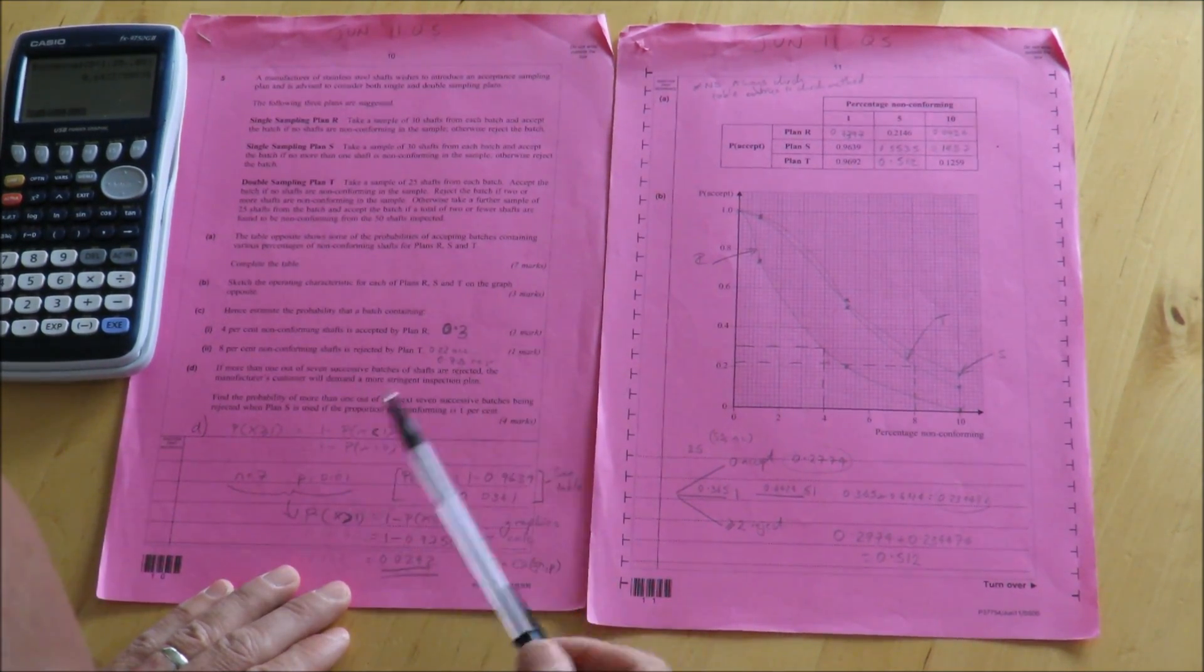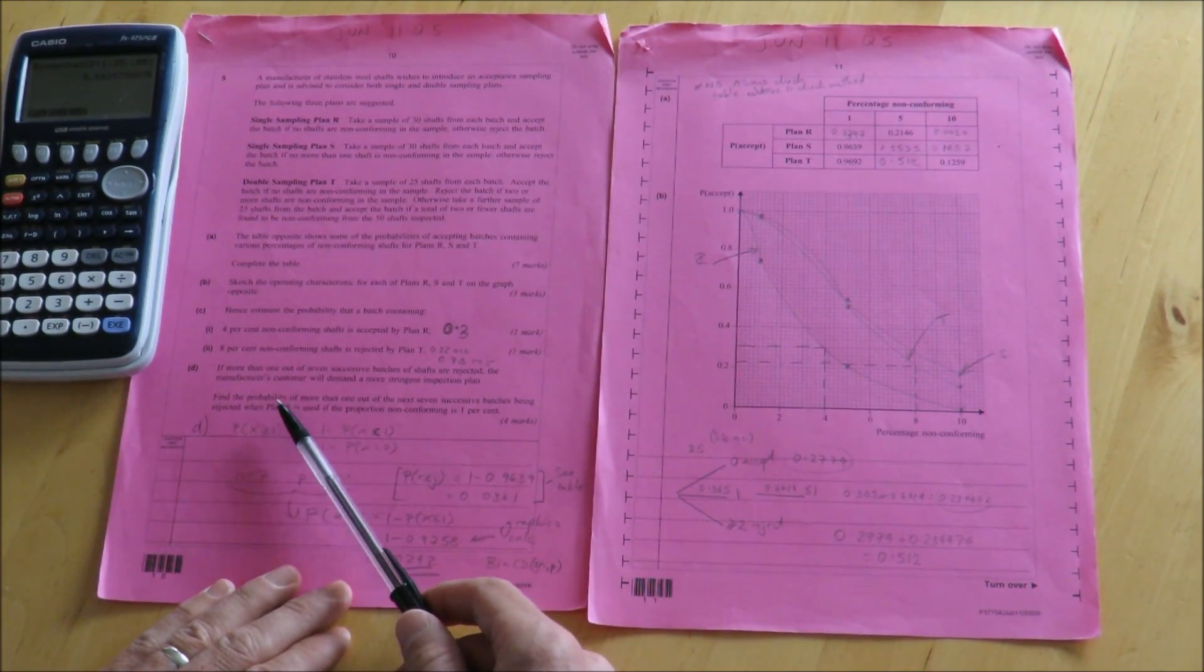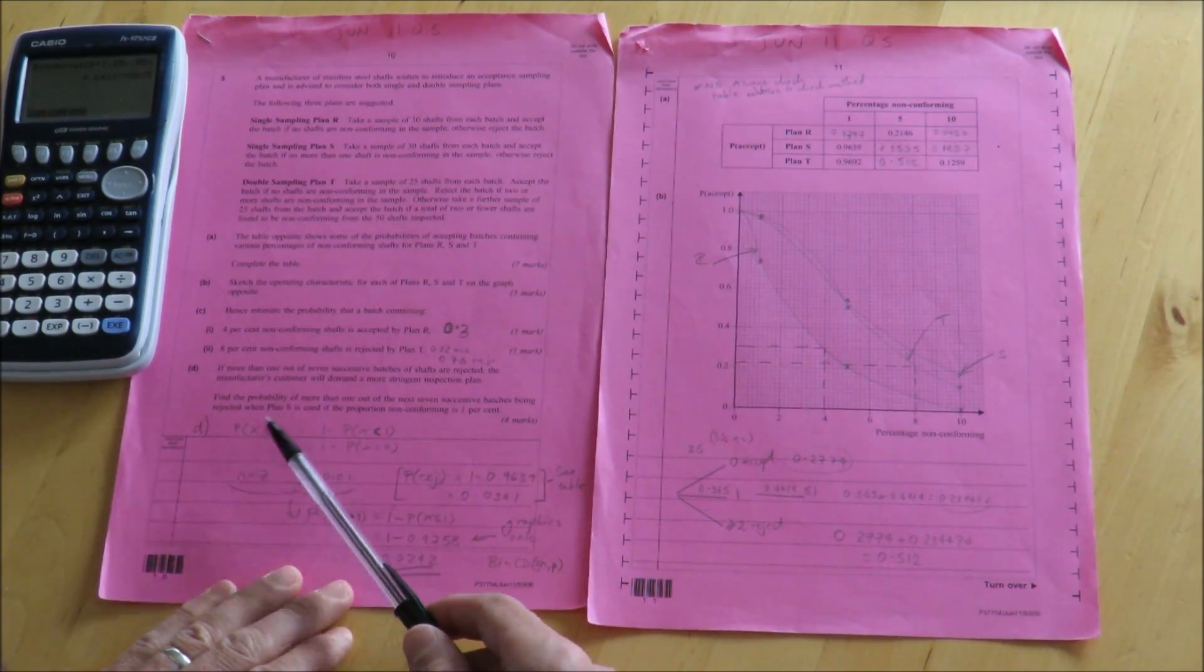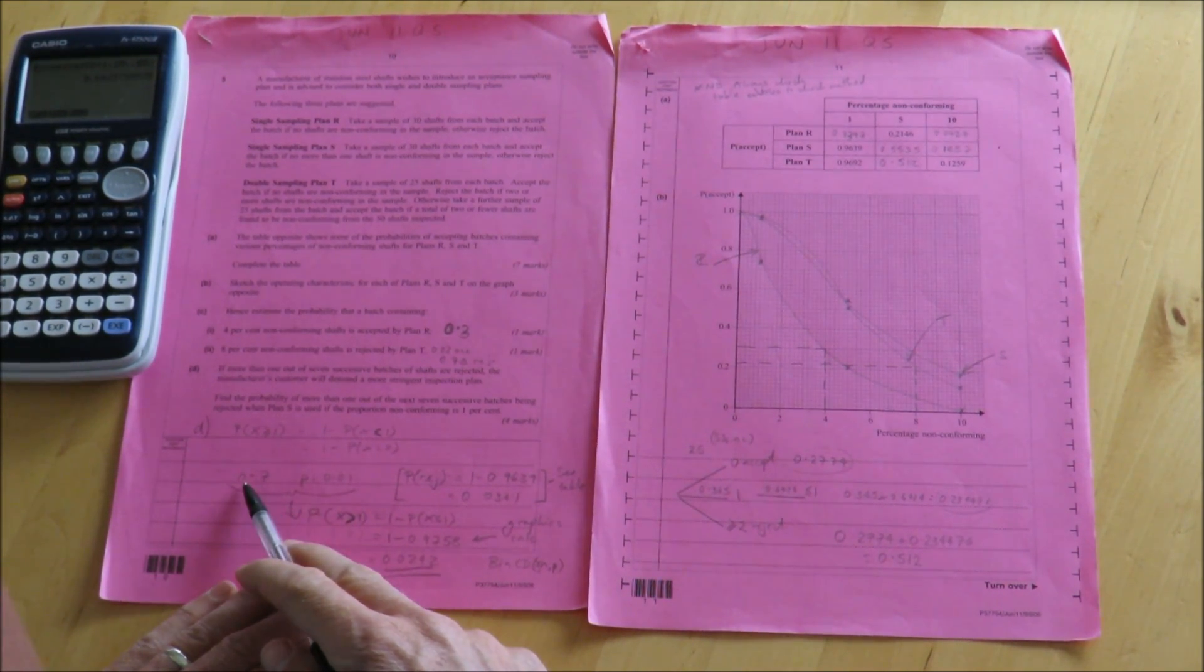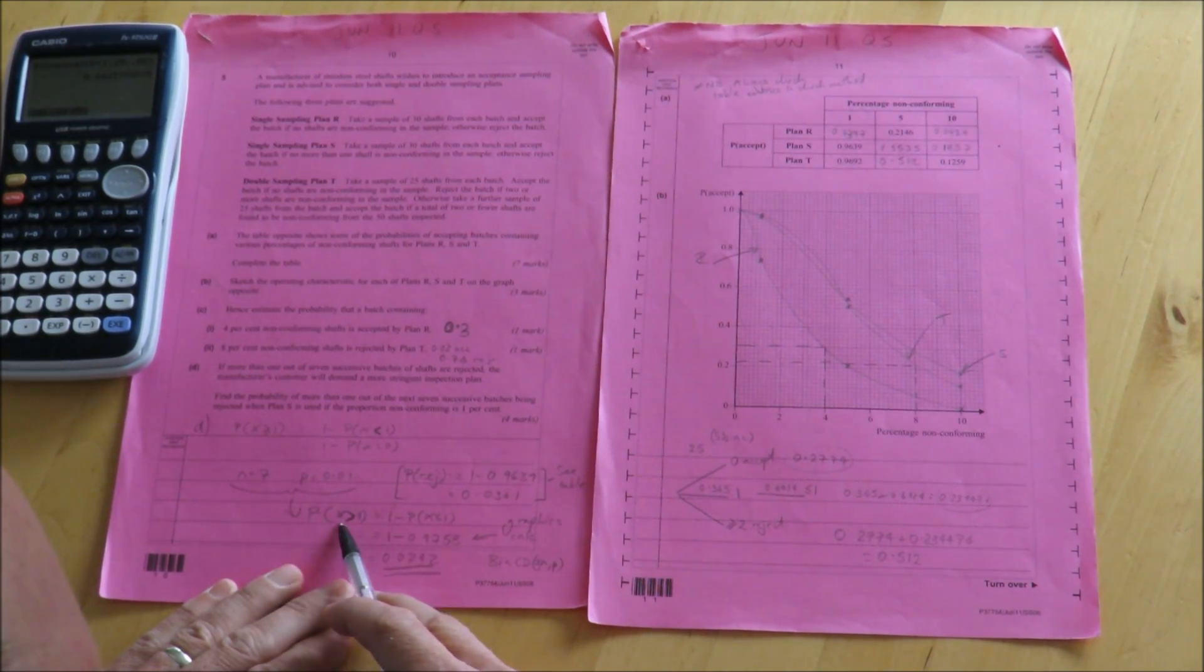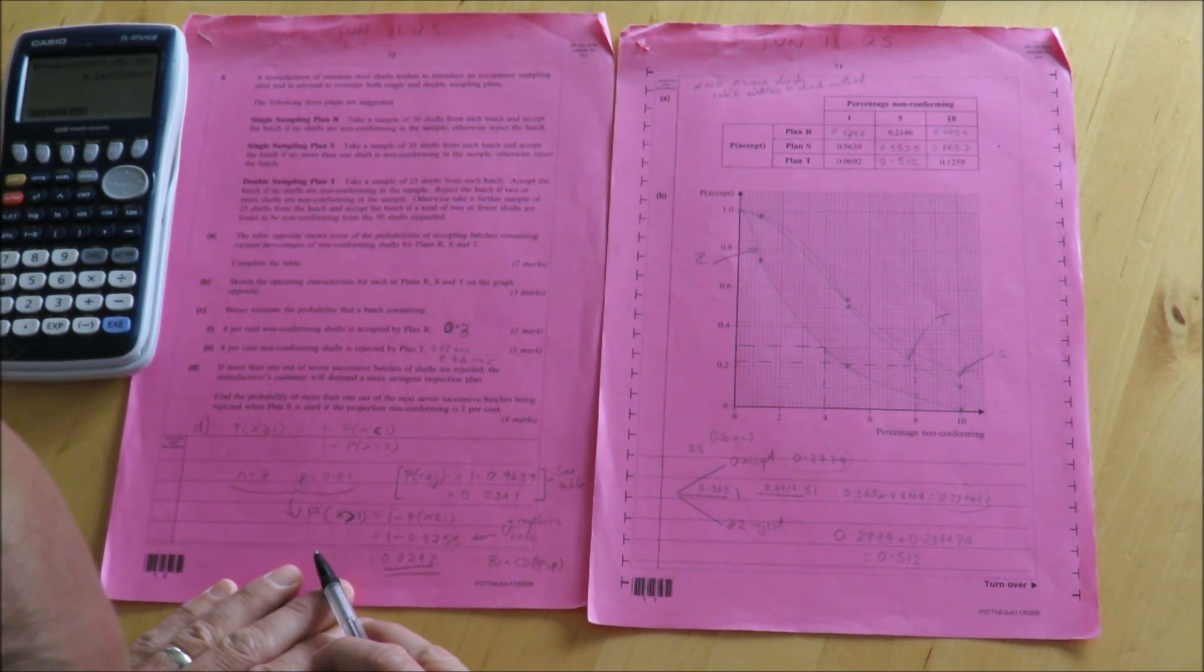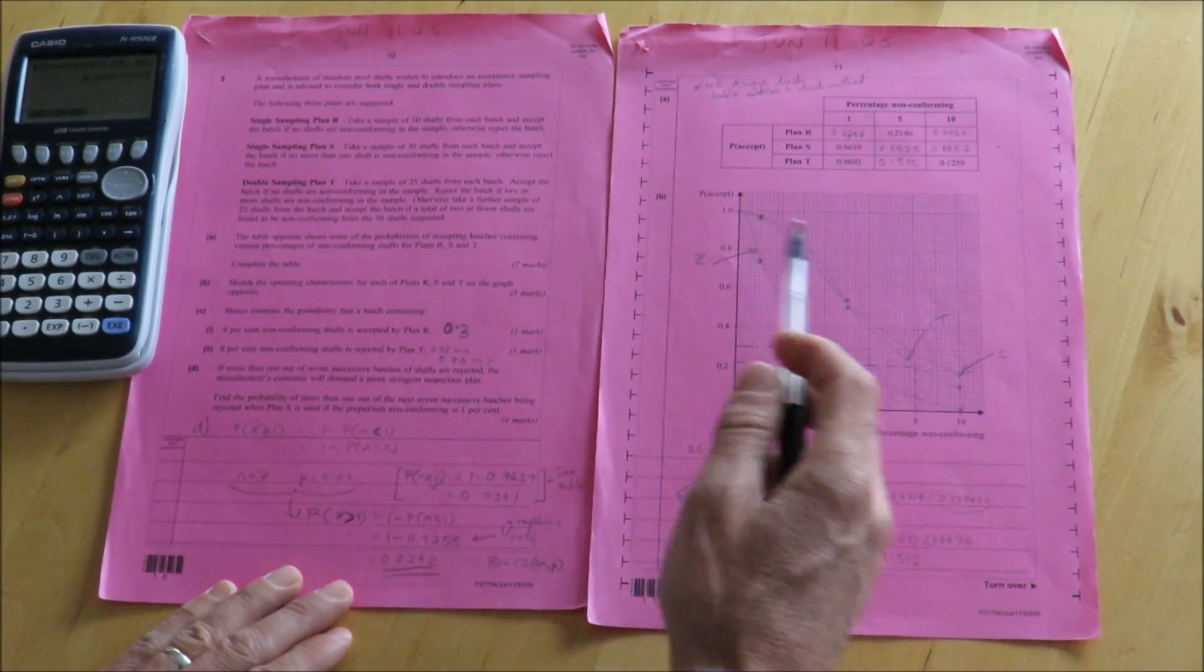And I've used an approach here using the tables, but the probability of rejection is 0.0361. That could be done on a graphics calculator in just the same way as we've used over here. For the second part then, it says find the probability of more than one out of the next seven successive batches being rejected when Plan S is used. What I've now done here is I've substituted n equals 7 into the equation. P equals 0.01 down here. And I've looked then for the probability that x is greater than 1 going in here. And that's 1 minus 0.9758. And it gives me a final probability of 0.0242.